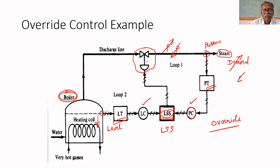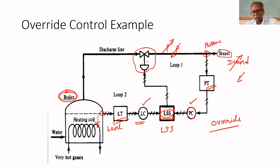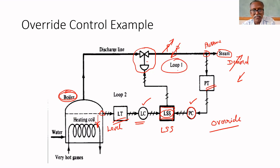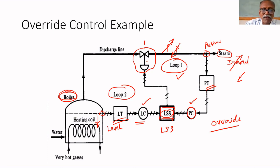It overrides the other — whichever is less will be selected. This LSS selects the lower value among the two signals. If pressure is less, loop 1 will work; if level is less, loop 2 will work. There is only one manipulated variable but two measurements — similar to cascade control.